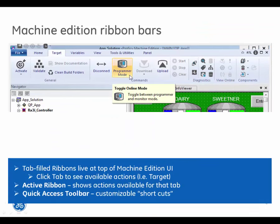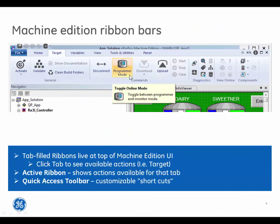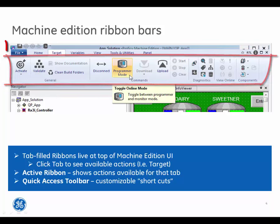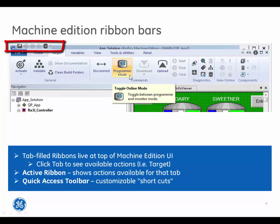The Machine Edition ribbon bars are tab-filled ribbons that live at the top of the Machine Edition user interface. Just click a tab to see your available actions — for example, Target. The active ribbon shows actions available for that tab, and the Quick Access toolbar provides customizable shortcuts.